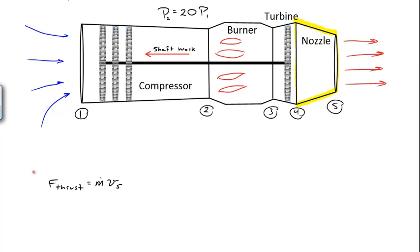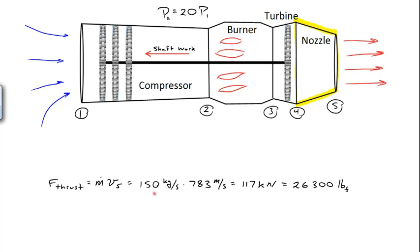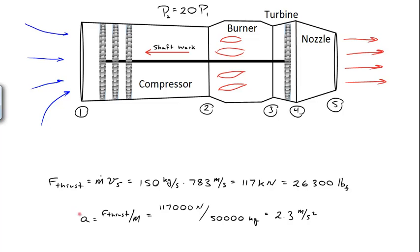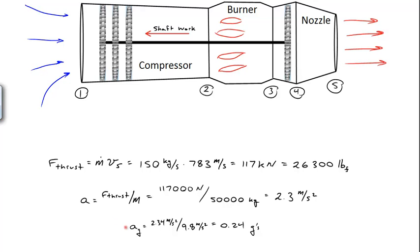The thrust force equals the mass flow rate of air times V5: 150 kg/s × 800 m/s ≈ 117 kN, or about 26,000 pounds — a typical value for a turbojet engine. Dividing by the airplane mass of 50,000 kg gives an acceleration of just over 2 m/s². Expressed in g-forces by dividing by 9.8, the initial forward acceleration is 0.24 g's.